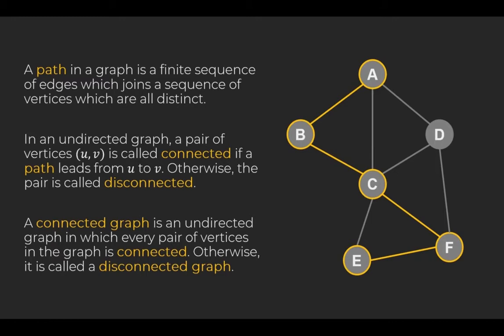In an undirected graph, a pair of vertices U, V is called connected if a path leads from U to V. Otherwise, the pair is called disconnected. We can see that the pair A, E is connected.